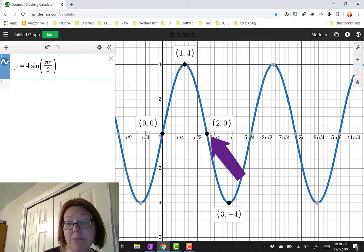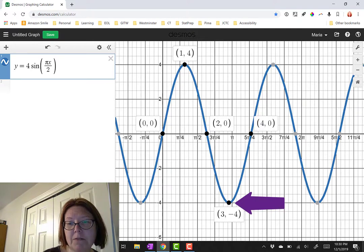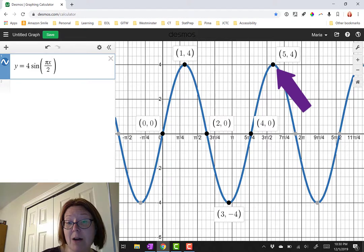Down to a minimum of 3, negative 4. Up to 4, 0. Then up to a maximum of 5, 4.